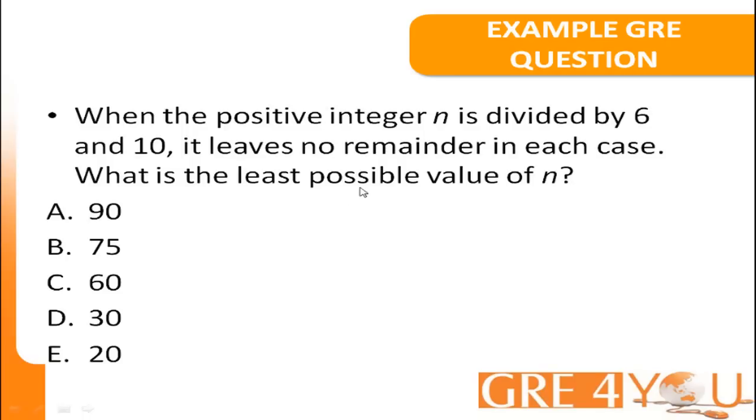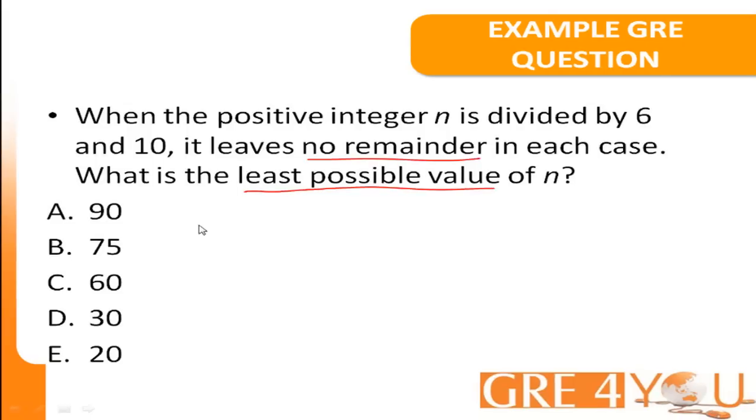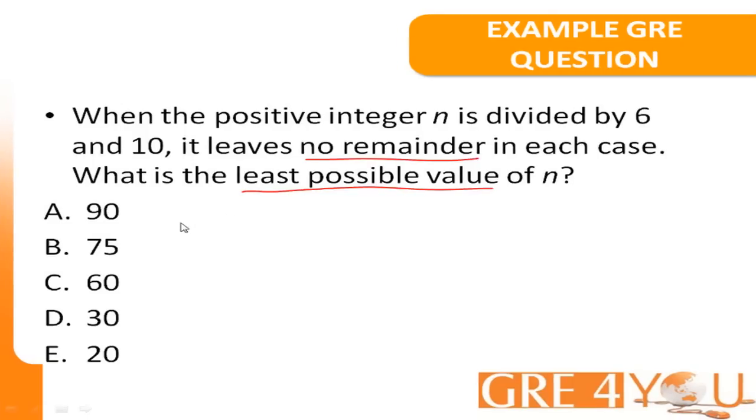Now, there are a few key terms that we have to make note of. The first is no remainder, and the second one is least possible value. Let's deal with the first one first. What it means is that when n is divided by 6, or when n is divided by 10, it leaves no remainder, and this lets us conclude that n is a multiple of 6 and 10.